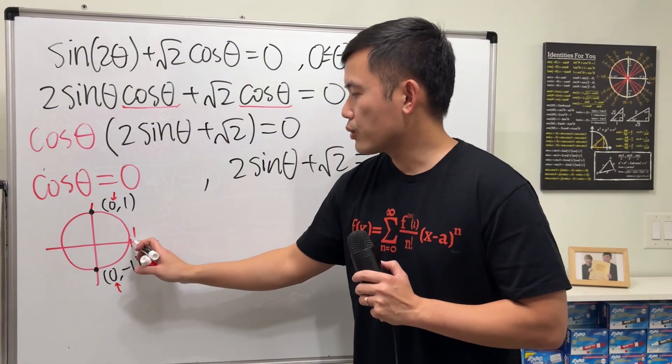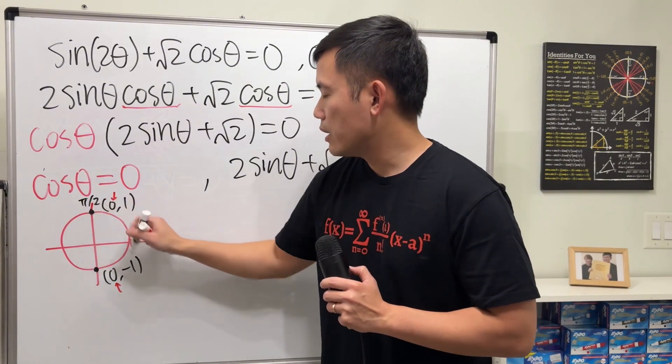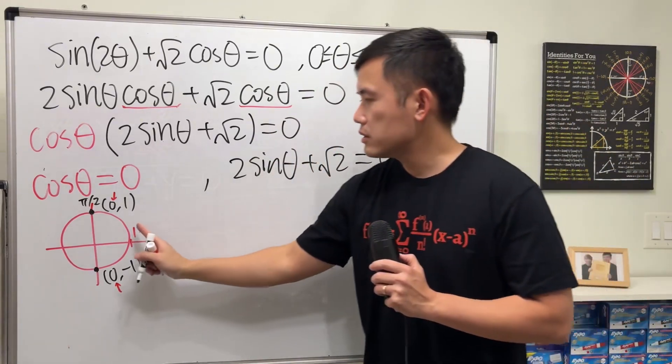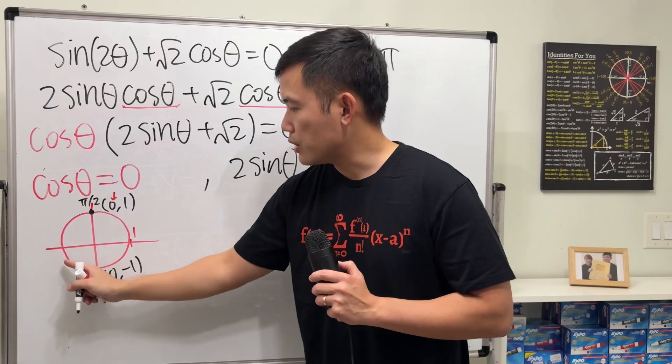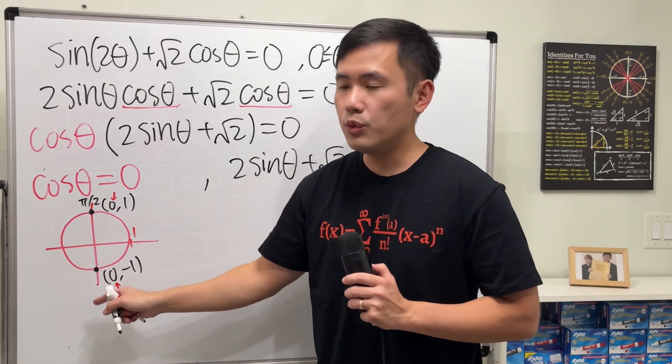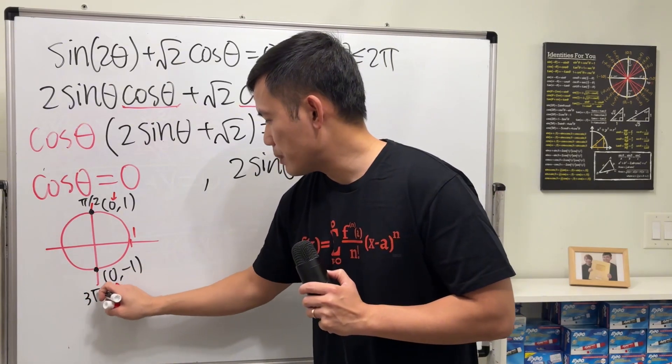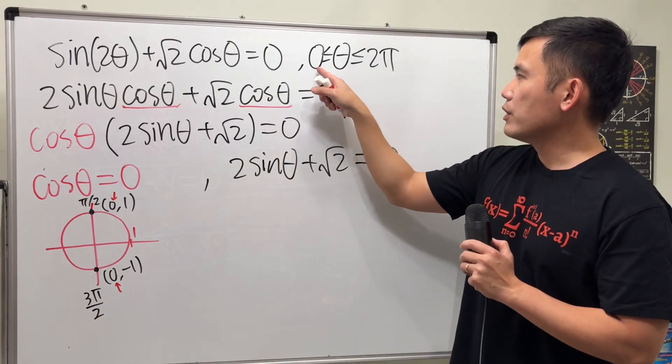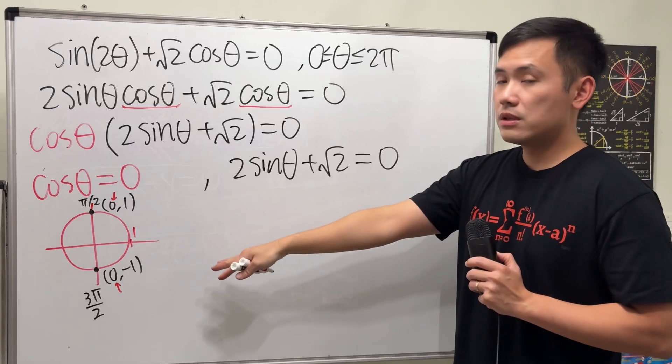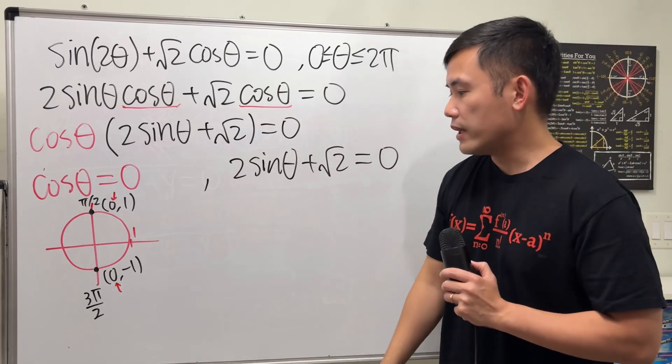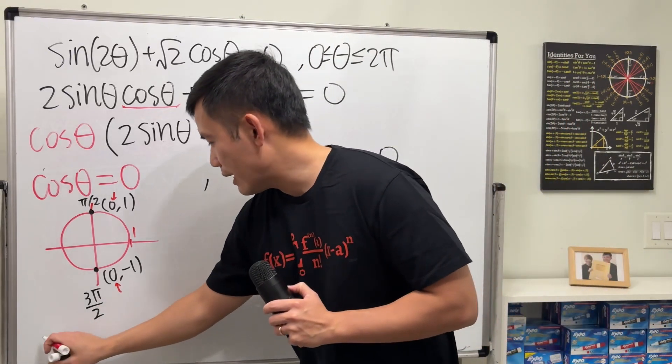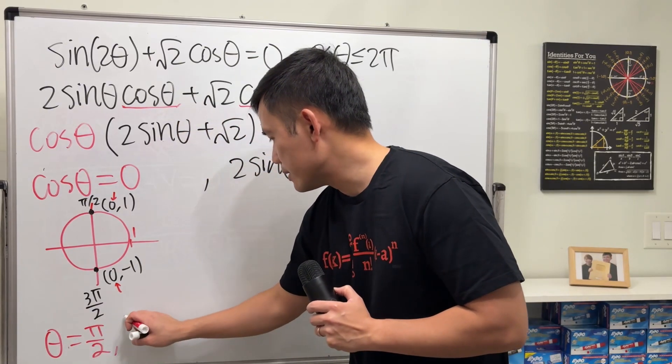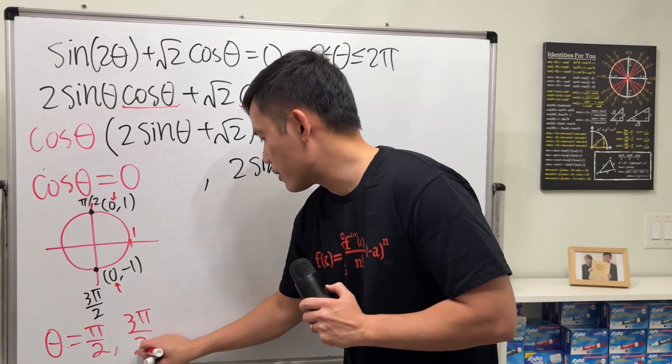Now the angle going from here to here is pi over 2. And because we are looking for positive angle from 0 to 2 pi, we're going to travel from here to here and that's 270 degrees which is 3 pi over 2. Usually when the theta is in between 0 to 2 pi, you are also going to answer the question in radians. So right here we have two answers. Theta is equal to pi over 2 and then the other one is 3 pi over 2.